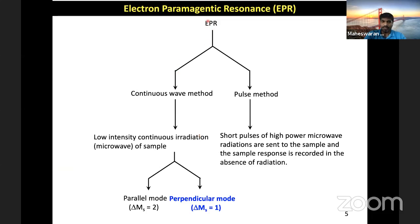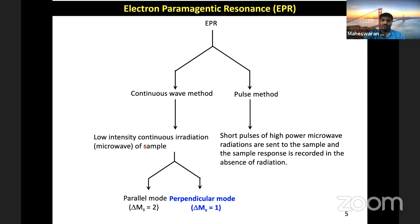In EPR, there are two different techniques: one is the continuous wave method, and the other is the pulse method. The pulse method involves sending a strong pulse of electromagnetic radiation and then probing the dynamics of your system. The continuous wave method, which is commonly and routinely used, continuously irradiates the sample with electromagnetic radiation and records the sample response accordingly. This is the method we are going to talk about today, as it is the conventionally applied method worldwide.